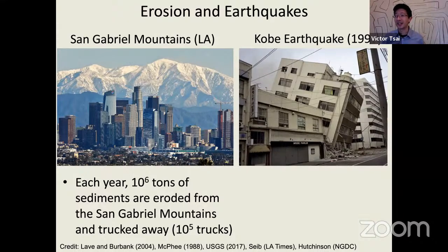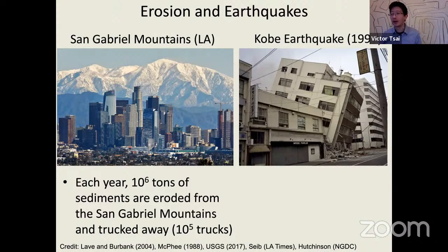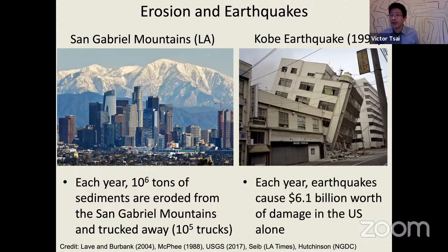Approximately 10^6 tons of sediments are eroded from the San Gabriel Mountains every year. Surprisingly, these sediments are actually trucked away on trucks because we don't want those sediments getting into the populated areas of the Los Angeles region. That implies approximately 10^5 trucks are needed to truck away all those sediments. There's an important question of why this erosion happens, which I'll address in part of this talk.